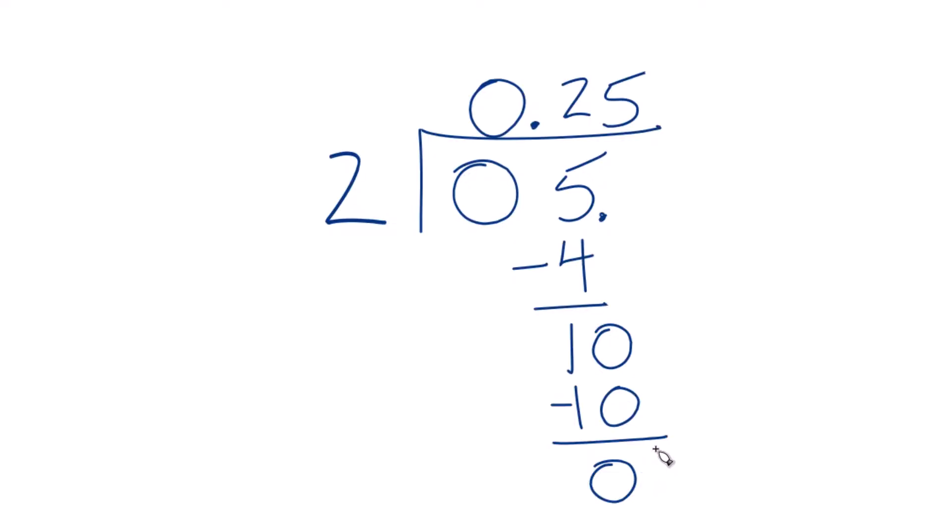So in answer to our question, 0.5 divided by 2 gives you 0.25. And we could check our work. 2 times 0.25, and that should give us 0.5. And it does.